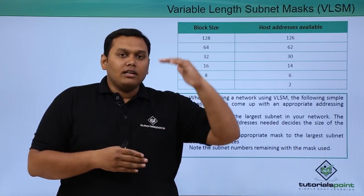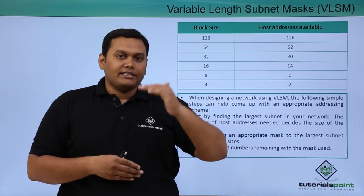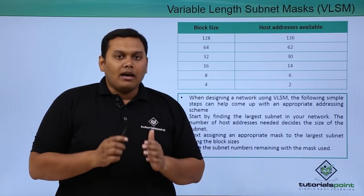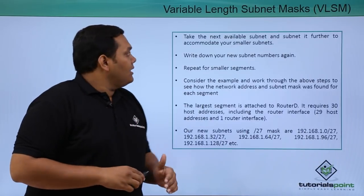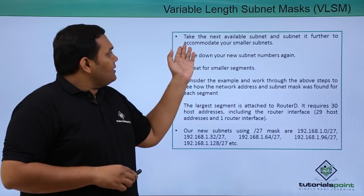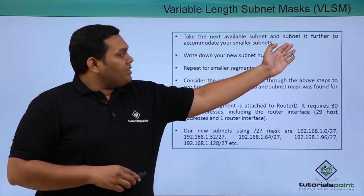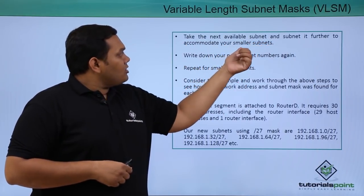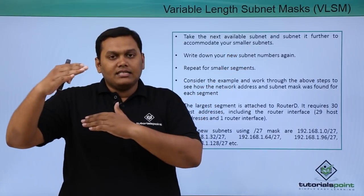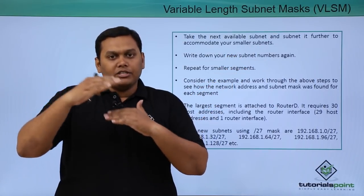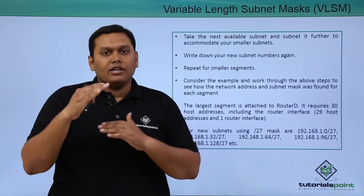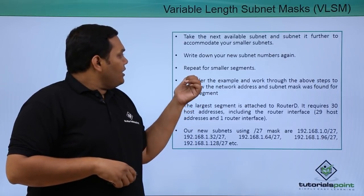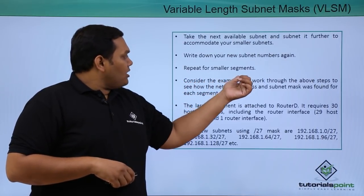The assignment follows the order: largest, next largest, next largest, and lowest. You create the subnet mask, take the next available subnet, and further divide or assign sub-subnets to the smaller subnets. After the largest subnet is assigned based on block size, you follow the same process with the next subnet and repeat for smaller segments.